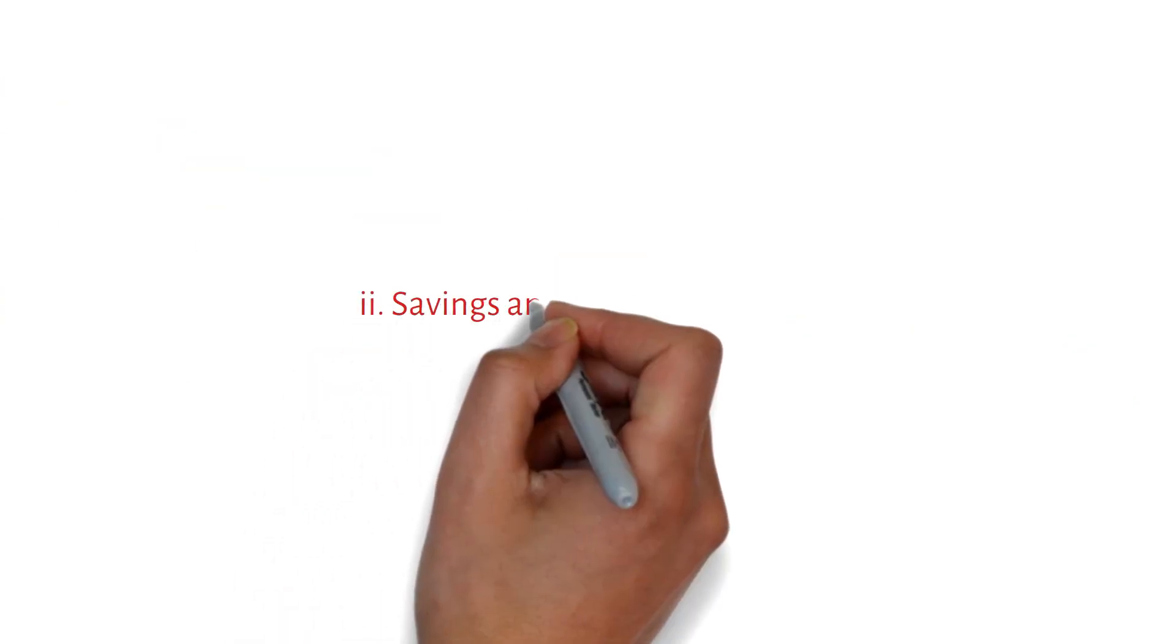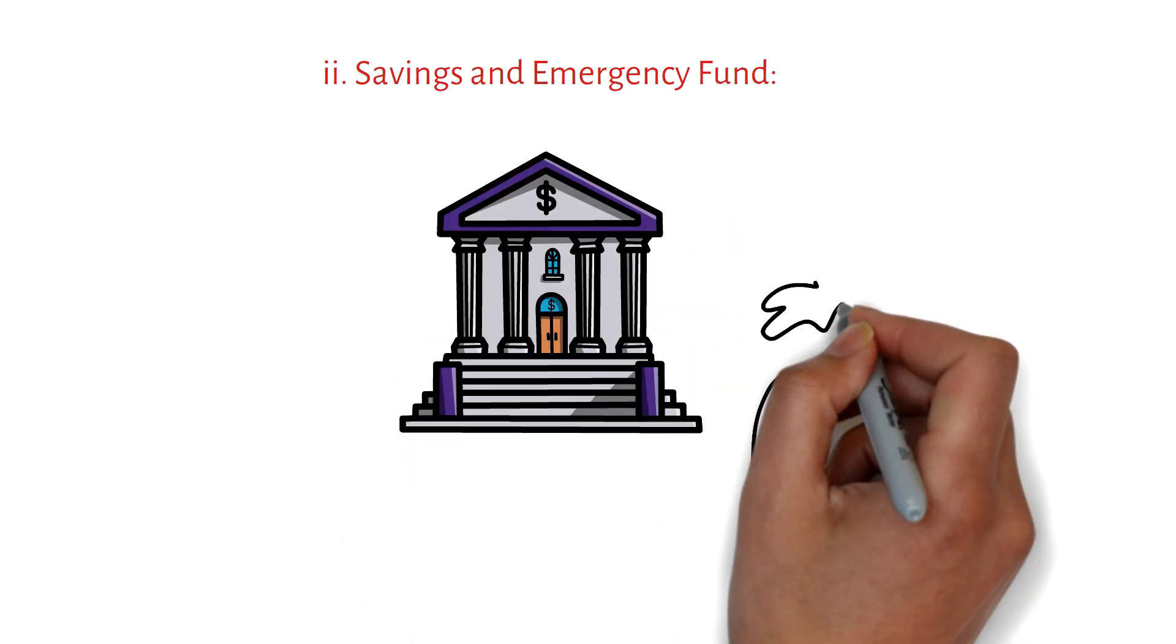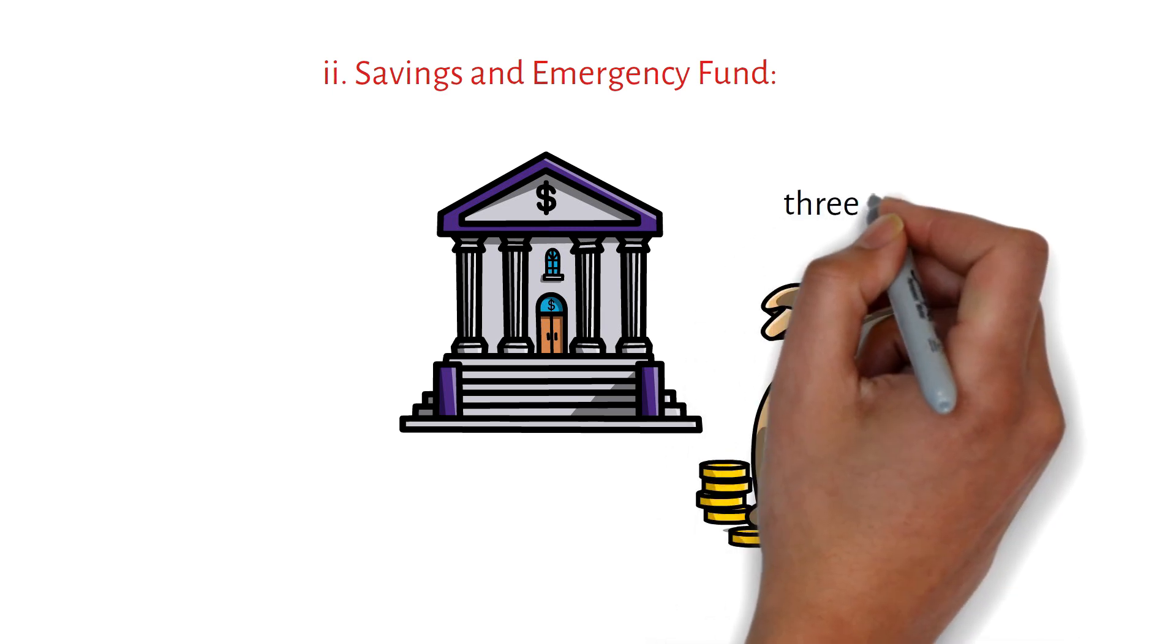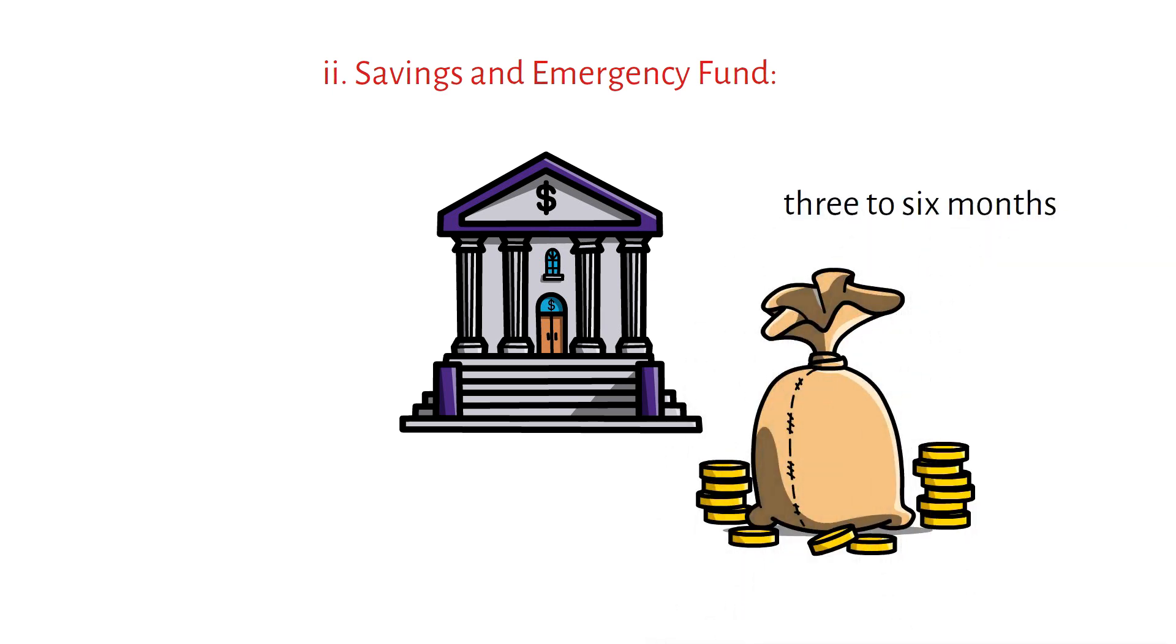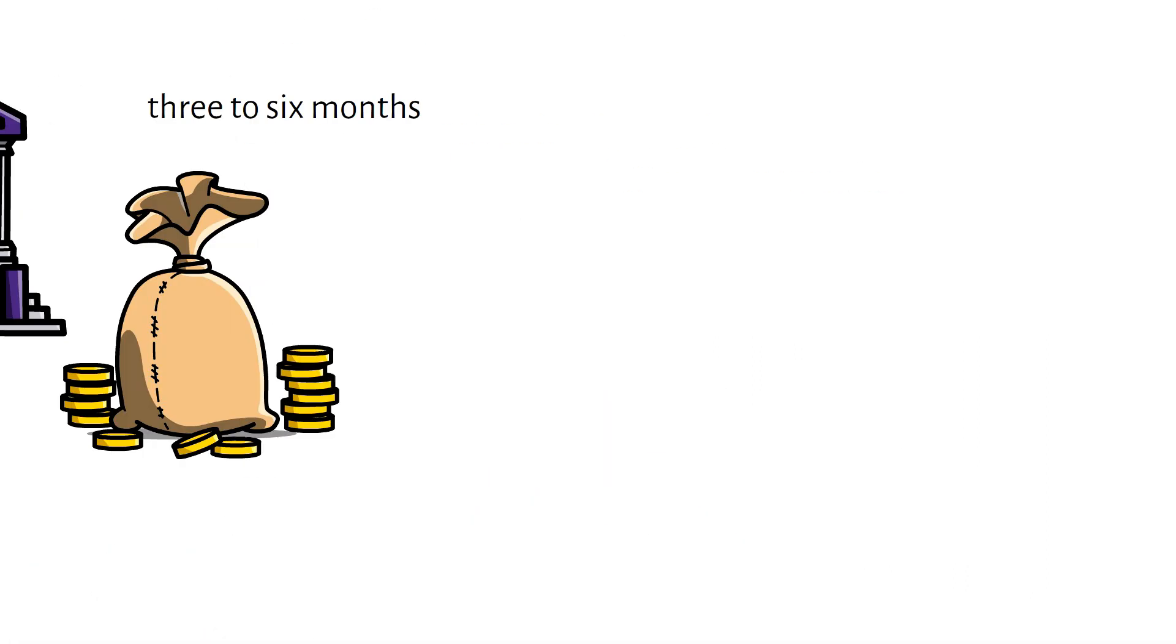Savings and emergency fund. Review your savings accounts and emergency fund. Assess whether you have an adequate amount set aside for unexpected expenses or financial emergencies. Aim to have three to six months' worth of living expenses in your emergency fund, which can provide a safety net during times of job loss or unforeseen circumstances.